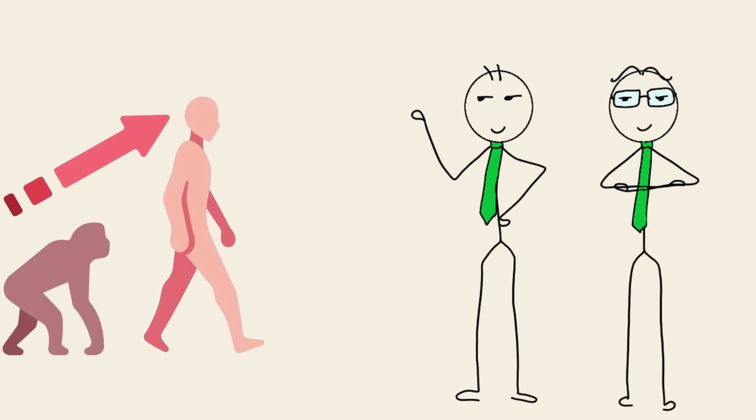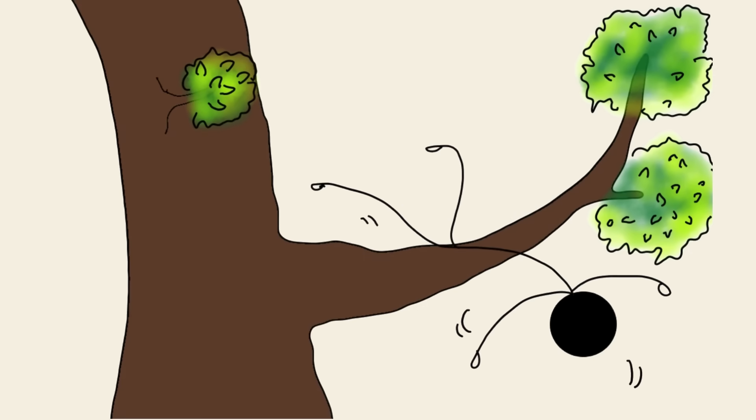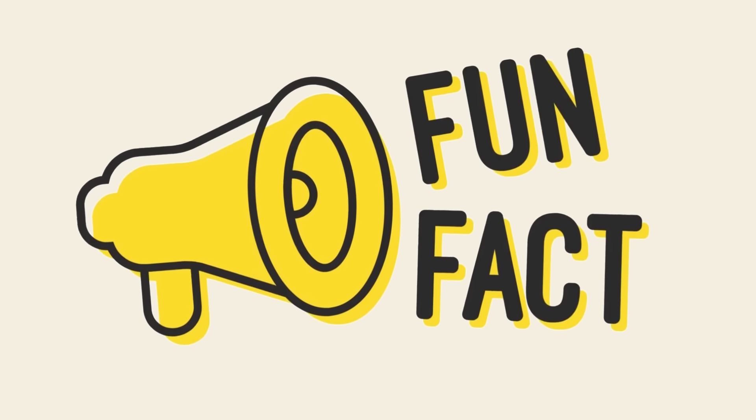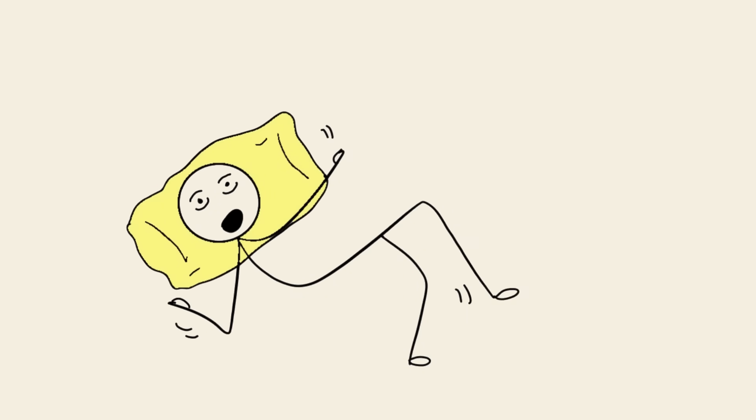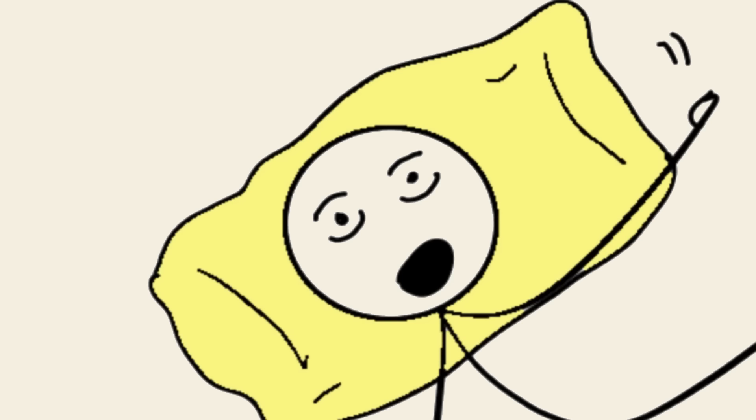Some researchers even believe it's a leftover from our evolutionary past, a primal twitch to prevent us from falling out of a tree while dozing. Fun fact, stress, caffeine, or sleep deprivation all increase your chances of getting jolted back into consciousness by your own limbs.